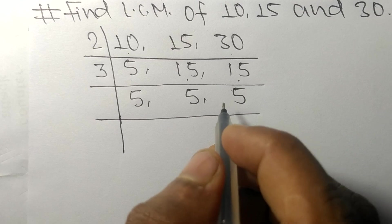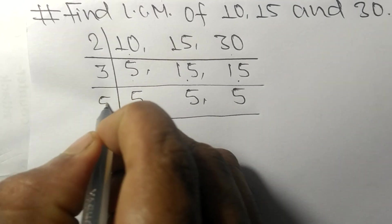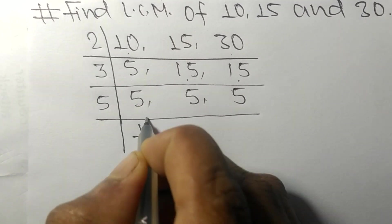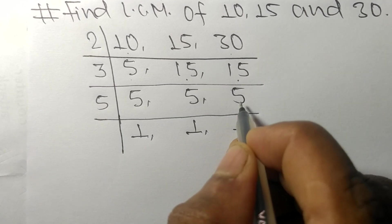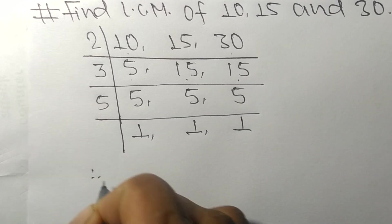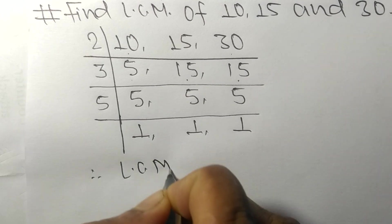These are all exactly divisible by 5. 5 times 1 equals 5, 5 times 1 equals 5, and 5 times 1 equals 5. So the LCM is...